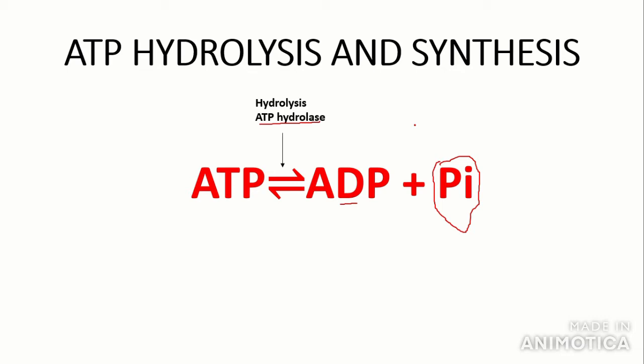This is catalyzed by the enzyme ATP hydrolase. The backwards reaction is a condensation reaction — the formation of chemical bonds, specifically the bond between ADP and the phosphate group to form ATP, catalyzed by the enzyme ATP synthase. You'll learn more about ATP synthase in the A2 content in the respiration section. This is a reversible reaction, and it is one of the crucial adaptations of ATP: it can be rapidly resynthesized once it is broken down.